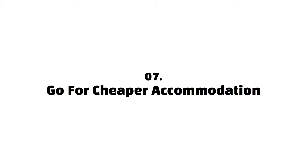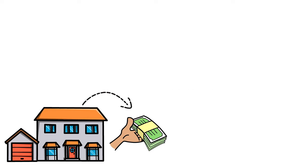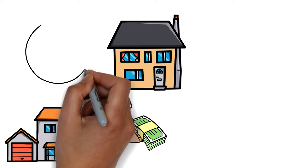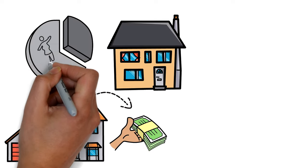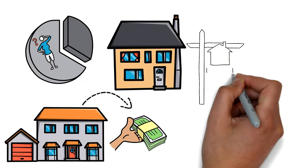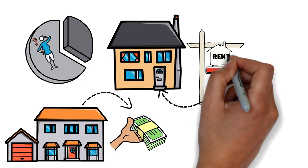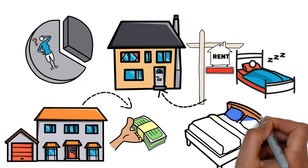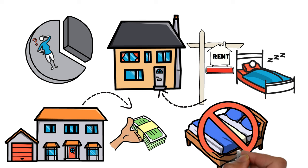Seven, go for cheaper accommodation. One thing that eats into our finances is housing expenses. Always go for cheaper homes. Why rent a duplex when you're living alone? Instead, rent smaller, cheaper home. Also, when sleeping out, avoid hotels. Use an Airbnb instead.